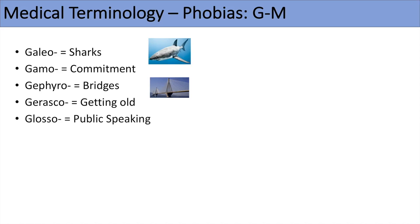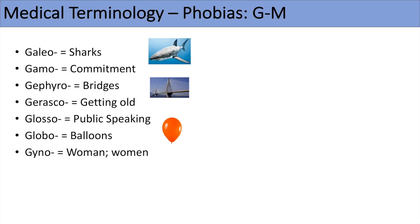The next prefix is glosso, meaning tongue or speech-related, and glossophobia is a fear of public speaking. The next one is globo, meaning balloons, so globophobia is a fear of balloons. Another one is gyno, meaning woman or women — think of gynecology — so gynophobia is a fear of women.